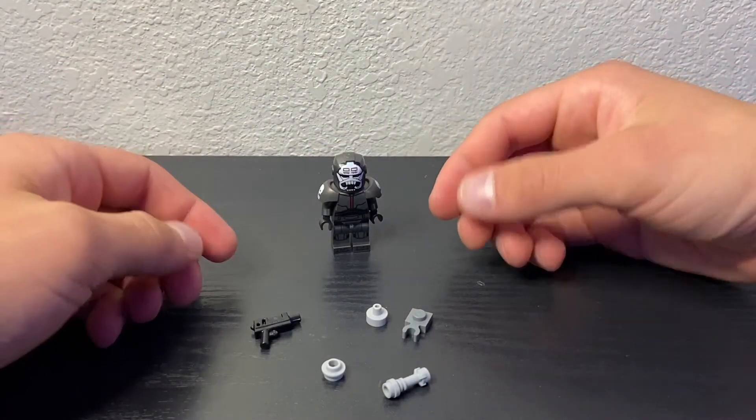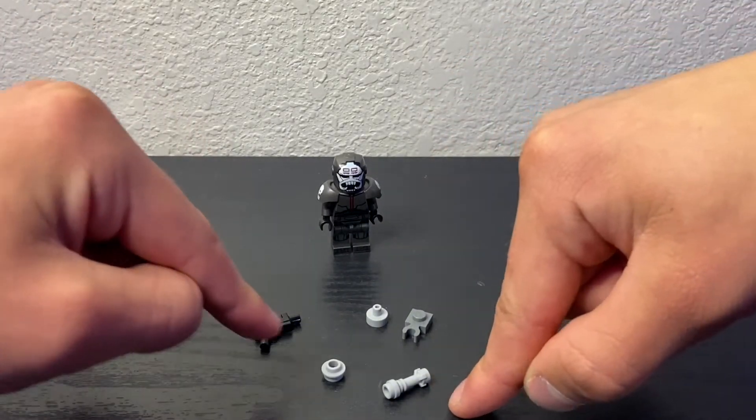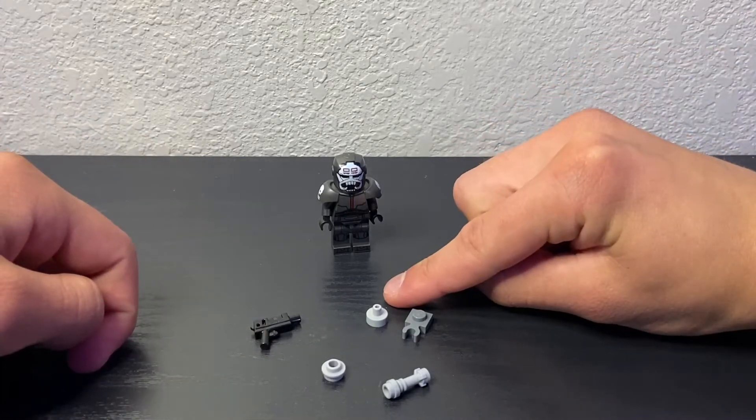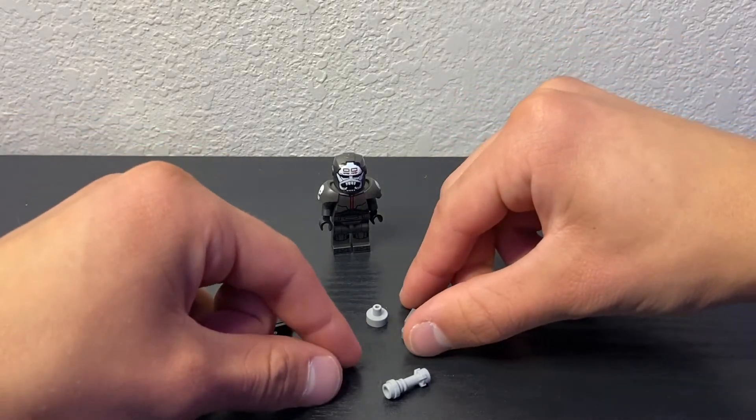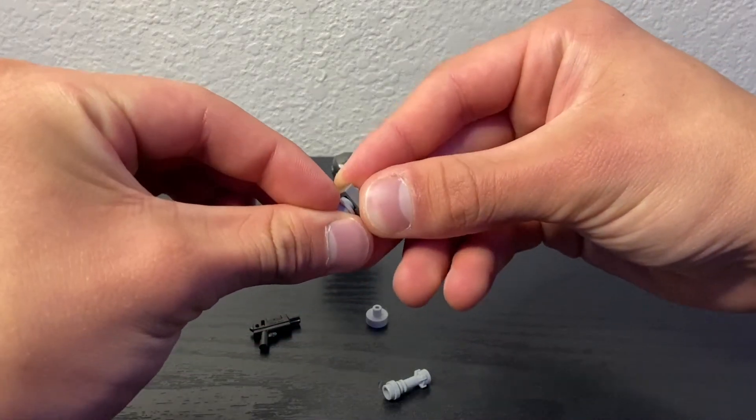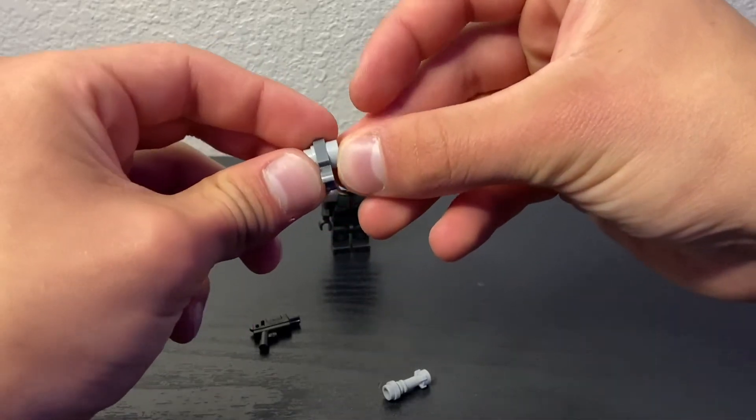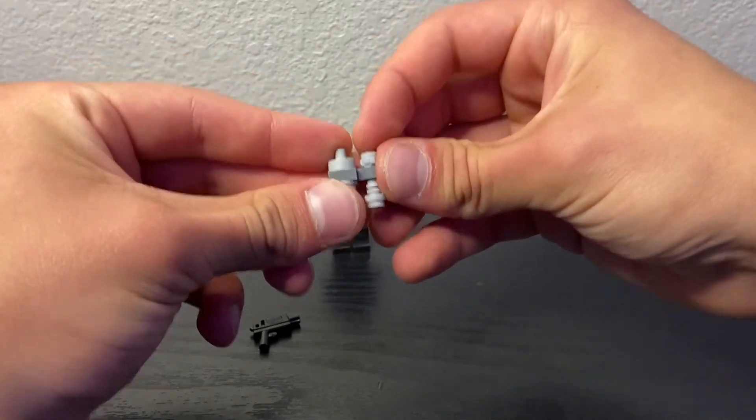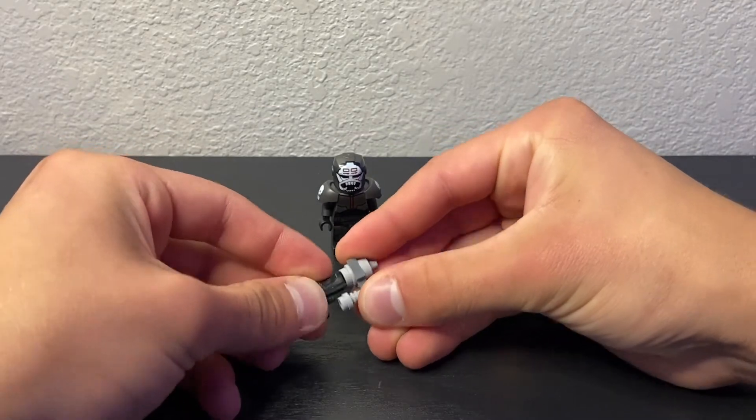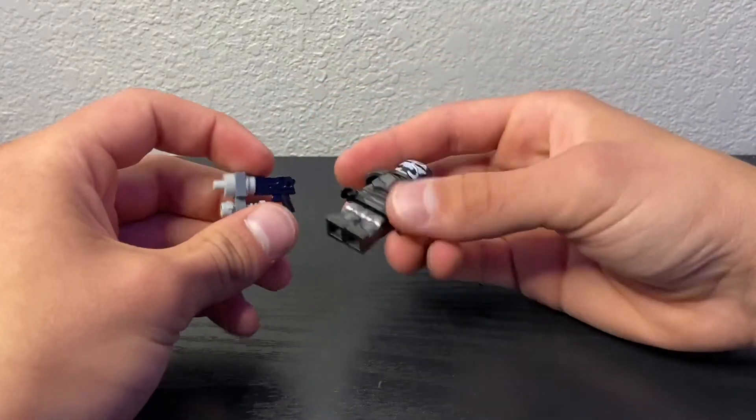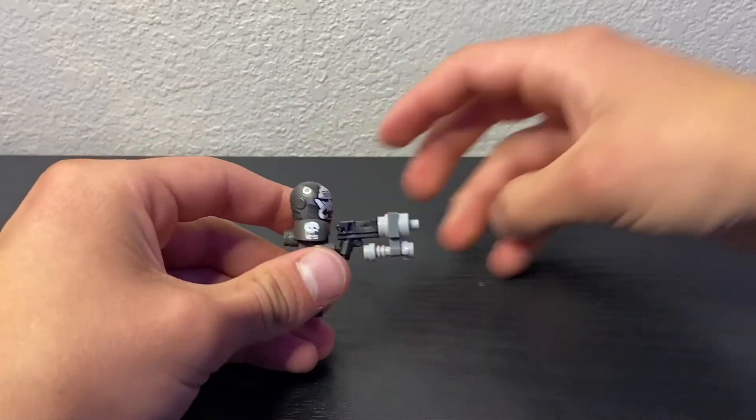All right. So now to build Wrecker's blaster, we're going to need our trooper blaster right here, a lightsaber hilt, a stud with a hole in the middle, one of these pieces, I don't know what it's called, and one of these clip pieces. Okay. So first thing that we're going to do is take our stud with a hole in the middle and our clip piece and put it on just like that. Then we'll take this piece, put it on right there. And we'll take this piece and put it on right there. And then stick our arc trooper blaster in like that. And there you have his gun. It looks a whole lot better than the one he originally had in the set.